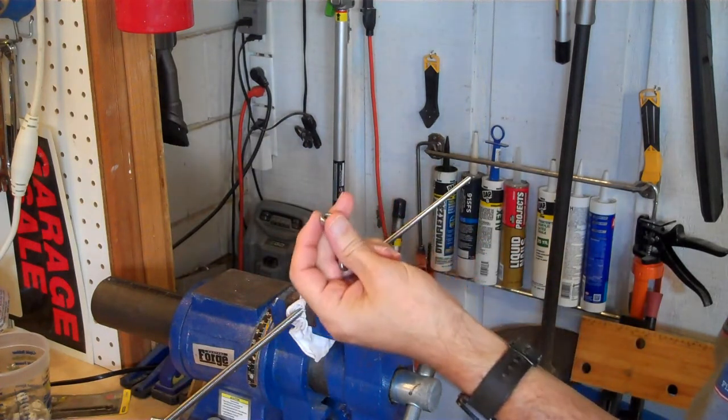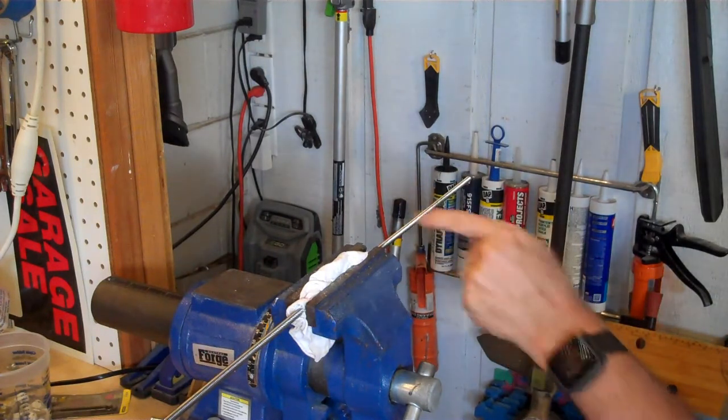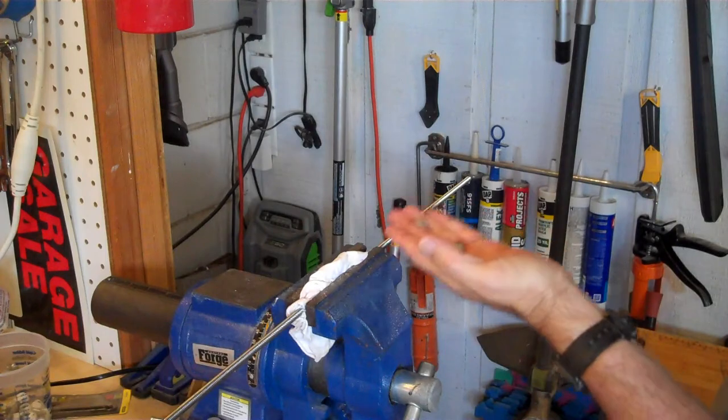If you don't have a die, a nut will work pretty well as a die if it's already on the rod. So before you cut this, put a nut on each side of the cut.